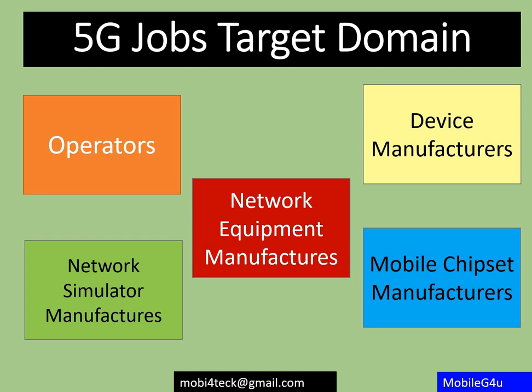The third domain is network equipment manufacturers, which is from the network side — like Ericsson, Nokia Networks, Jetty, and Alcatel. So many network equipment manufacturers are there. The fourth domain is mobile chipset manufacturers like Qualcomm, MediaTek, Unisoc, and HiSilicon.